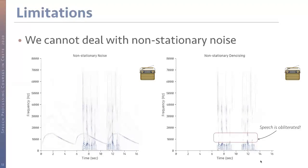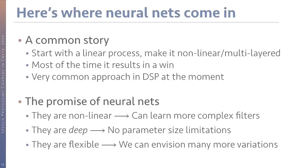That's our starting point for getting into neural networks. What we want is a denoising process that can deal with dynamically changing types of noise. We're going to take this linear process and slowly turn it into a neural network by making it nonlinear, adding depth, and adding elements that make it look more like a neural network and less like a regular filter.